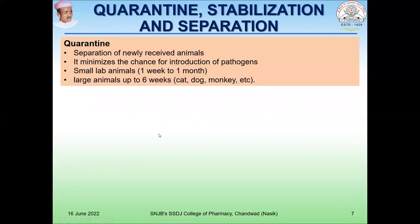Quarantine, stabilization, and separation are important. Quarantine is the separation of newly received animals from animals already available in the animal house. The advantage of quarantine is that it minimizes the chances of introduction of pathogens, as animals procured from other establishments or environments may spread infections. Before entering the animal into the actual animal house, a quarantine area should be developed. For small animals, the quarantine period should be one week to one month, and for large animals, the quarantine period should be six weeks.